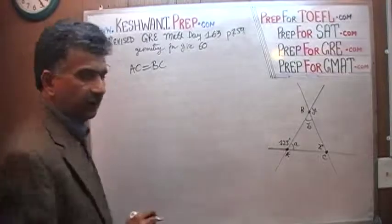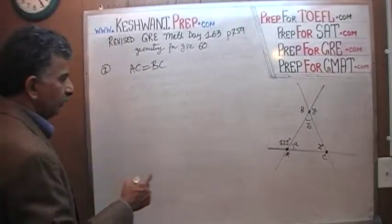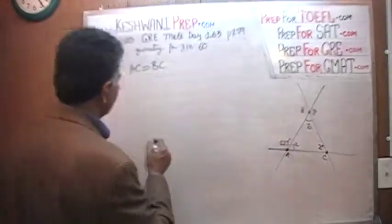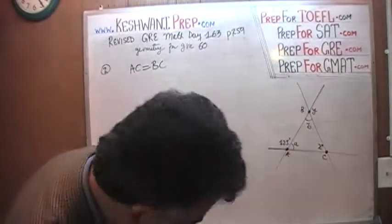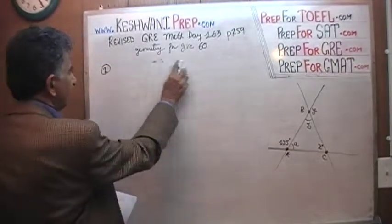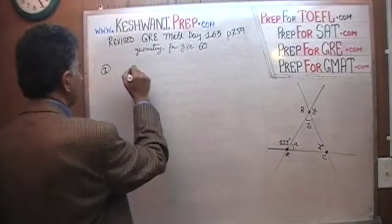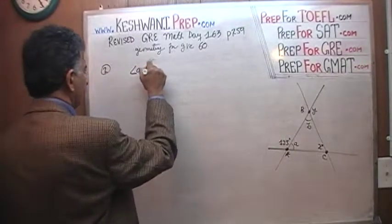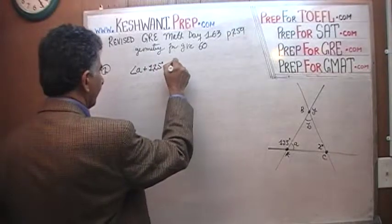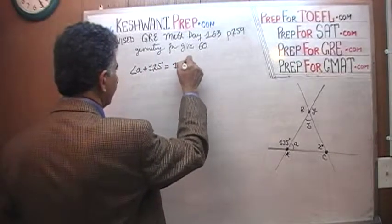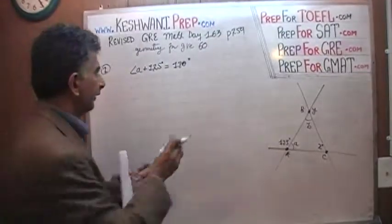What can we find out about angle A? We know that a straight line makes 180, which tells us, and this has nothing to do with AC being equal to BC, this is completely entirely different. So here in this picture, we know that angle A plus 125 degrees equals 180 degrees because they make a straight line.